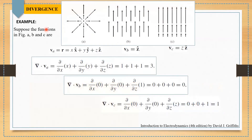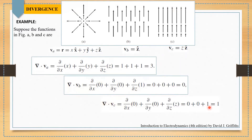Let's look at an example where we have a few functions along with the plots of those functions. We have a function with a plot in figure a, a function with a plot in figure b, and a function with a plot in figure c. By taking the divergence of all three functions: the divergence of the first function gives three, the divergence of the second function gives zero, and the divergence of the third gives one.